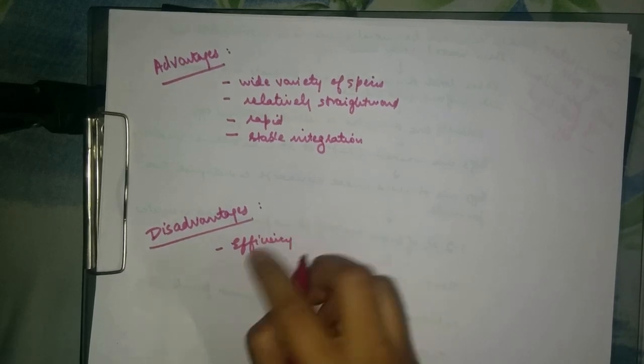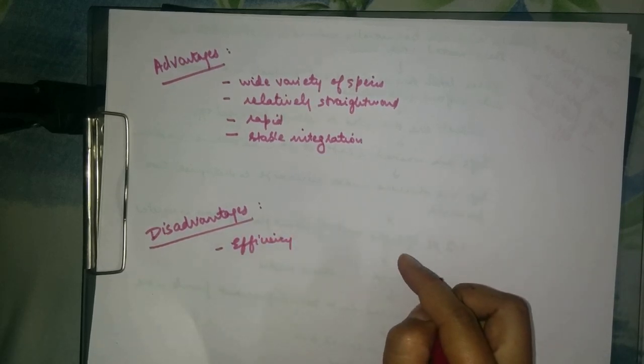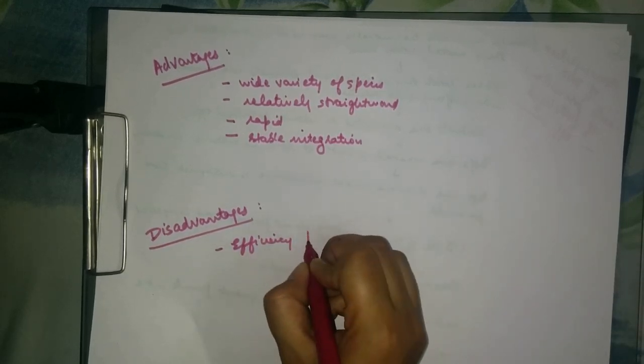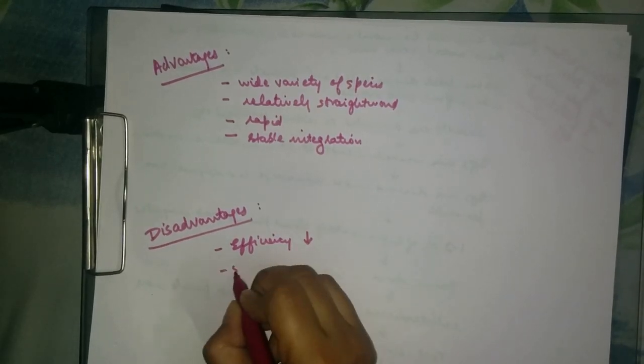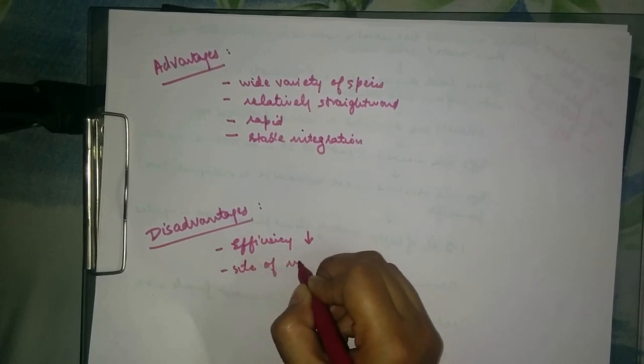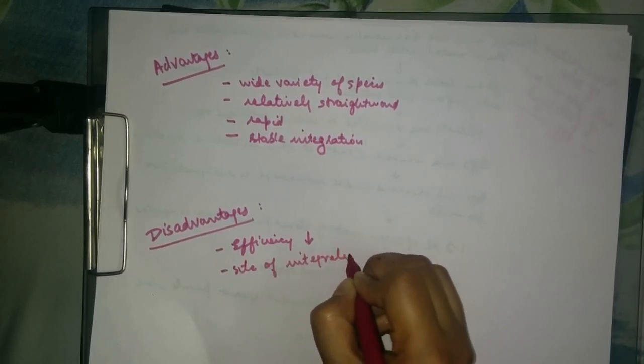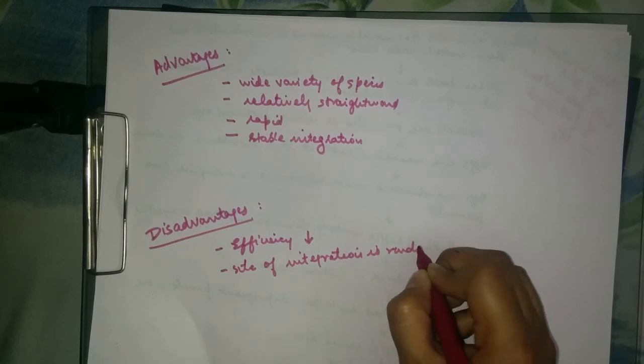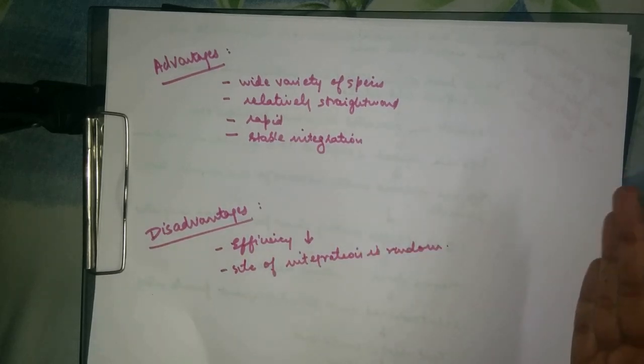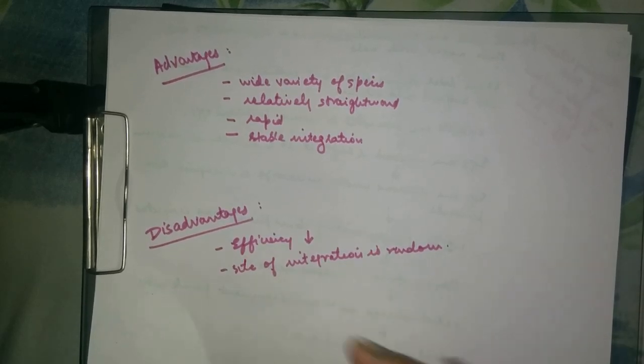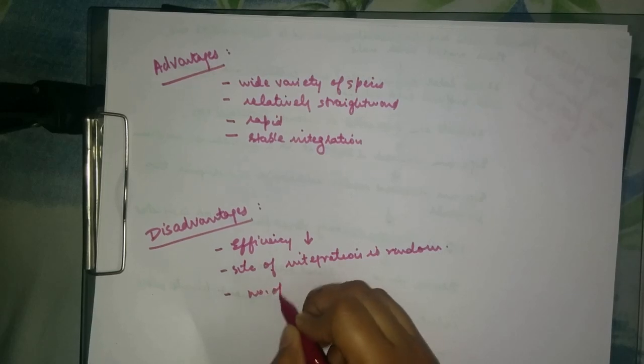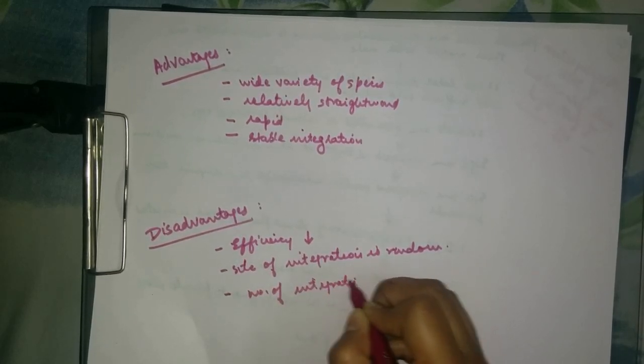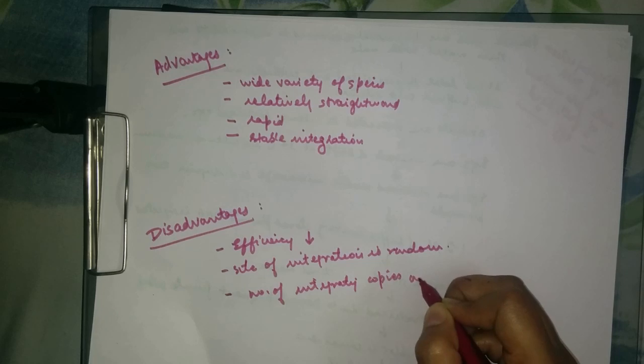The disadvantages of this method are that the efficiency of obtaining transgenesis is relatively low, even with the most skillful worker. The site of integration is random and it is variable in individuals. It can be non-existent if introduced into silent regions. The number of copies that integrate is highly variable.